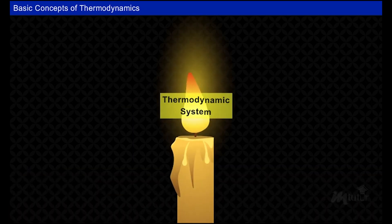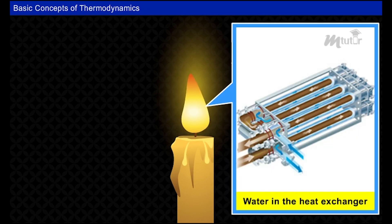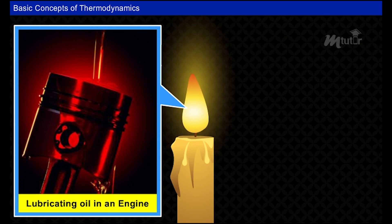Before heading into the next topic, let us ignite a candle to know about all these terminologies. A thermodynamic system is a defined space or area in which the transfer of mass, energy, or both takes place. Water in a heat exchanger and lubricating oil in an engine are some examples of a thermodynamic system.